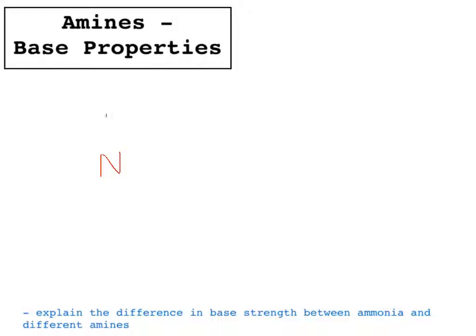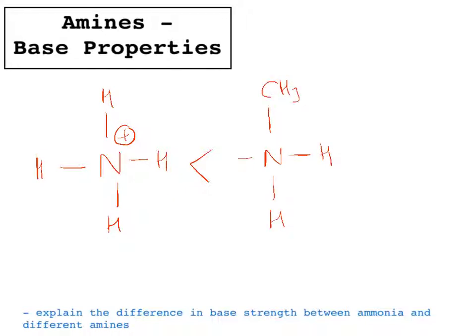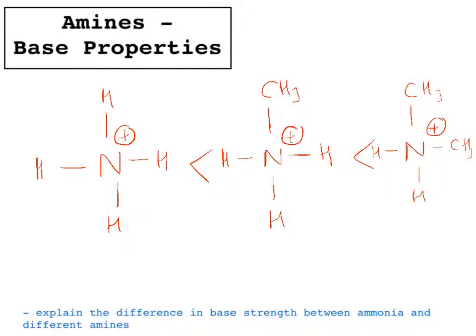An ammonium ion with just four H's around it will be less stable than a primary amine that has accepted a proton, because the CH₃ alkyl group has a positive inductive effect and pushes electrons onto that nitrogen. Similarly, a secondary amine that has accepted a proton — a nitrogen with two alkyl groups on it — will be more stable again, because it has more positive inductive effect from those methyl or alkyl groups.